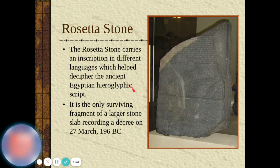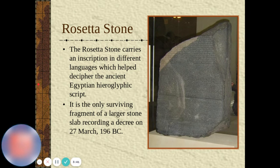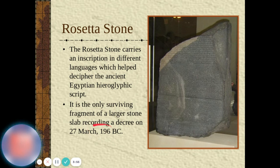The Rosetta Stone carries an inscription in different languages, which helped decipher the ancient Egyptian hieroglyphic script. It is the only surviving fragment of a larger stone slab recording a decree on the 27th of March, 196 BC. That was getting close to the time when things were going to be changing.